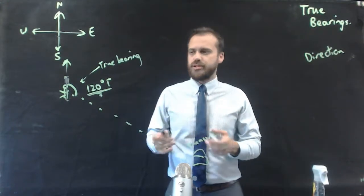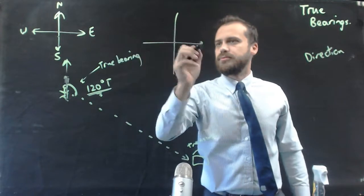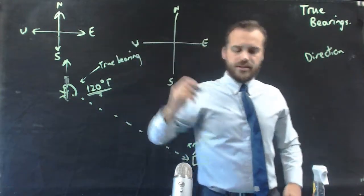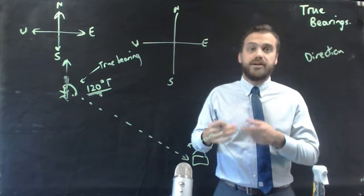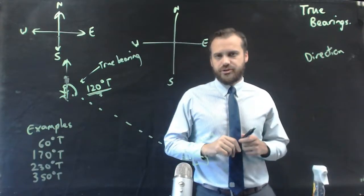Now I'm just going to draw in some true bearings on a compass rose so you can see it again. So, let's choose four examples so you can see exactly how true bearings work. Here's our four examples. The first one is 60 degrees true.